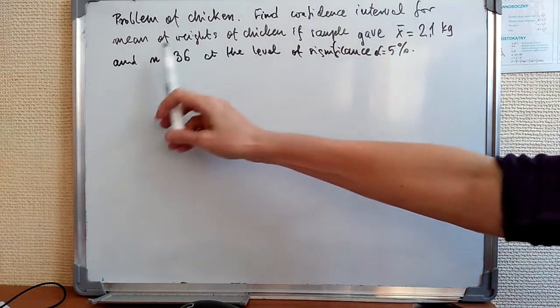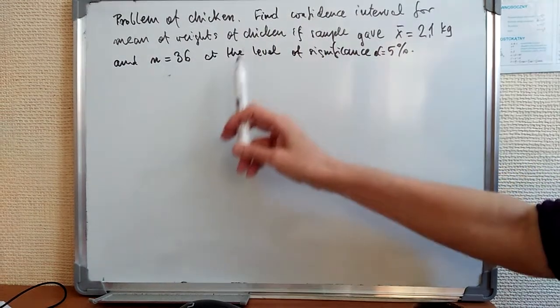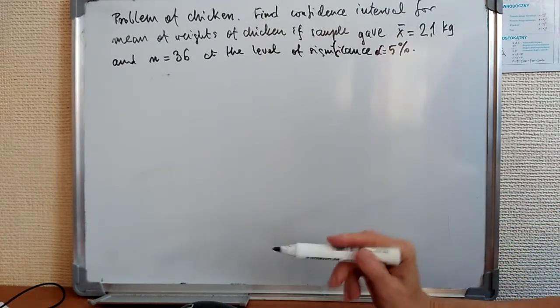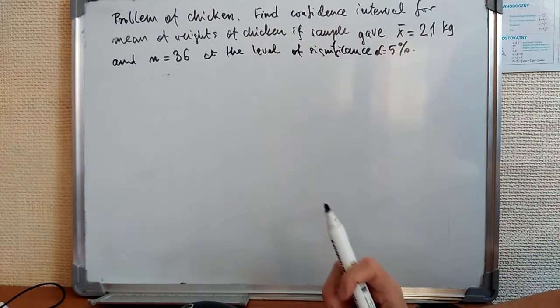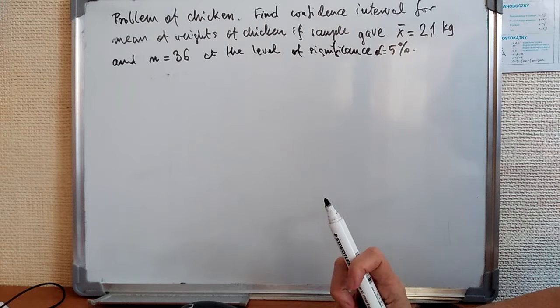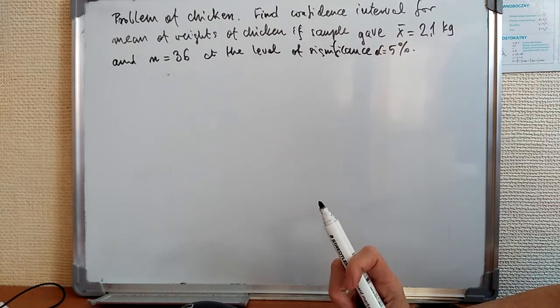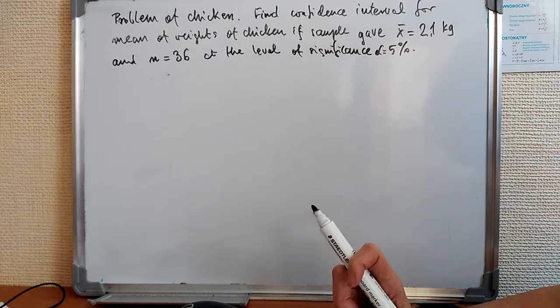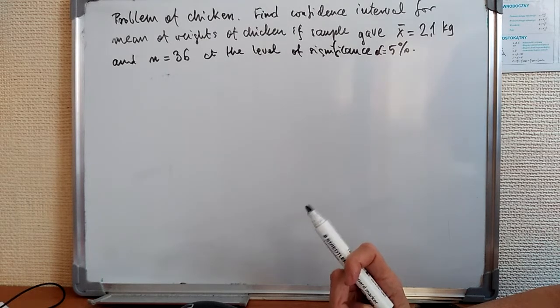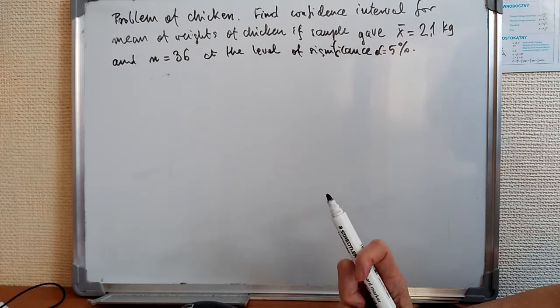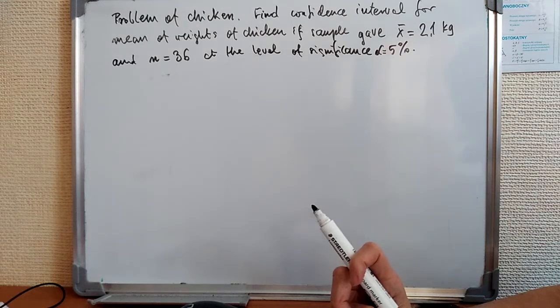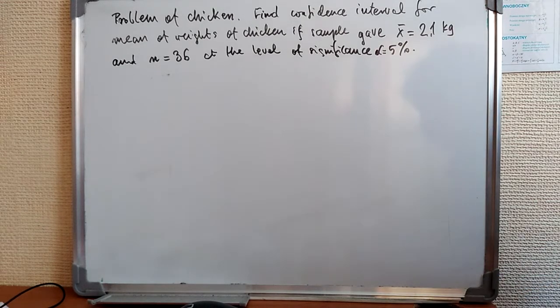So let's formulate it more statistically. Find confidence interval for the mean of weights of chicken if the sample gave us the mean of 2.1 kilograms, and there were 36 chicken. So the sample contained 36 elements, and we want to know at the level of significance alpha equals 5%.